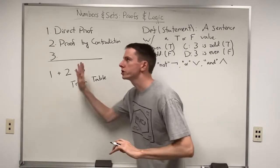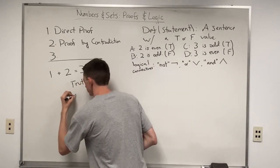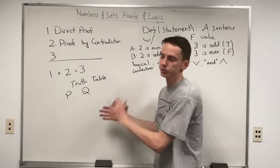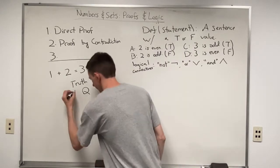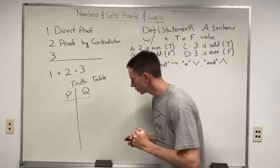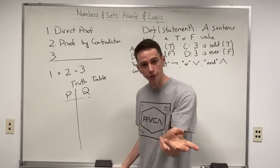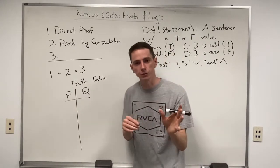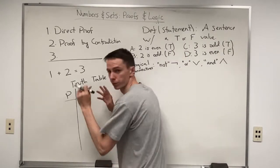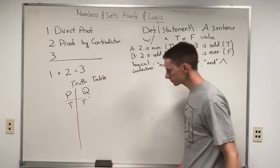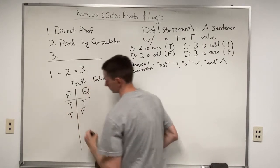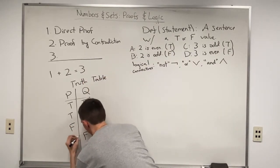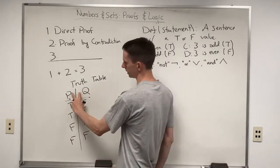For the first two columns of my truth table, I'm going to denote two arbitrary statements as P and Q — that's the common notation you'll see in textbooks. If P and Q are arbitrary statements, P can be true or false, and Q can also be true or false. So there are four possible combinations: both true (T, T), one true one false (T, F), the swap (F, T), and both false (F, F).